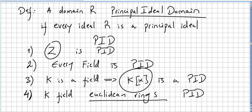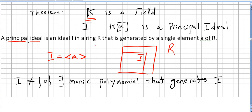In this video we are going to introduce the concept of principal ideal domains. The definition is: if we have a domain R, it is called a principal ideal domain if every ideal in R is a principal ideal. A principal ideal is an ideal I in a ring R that is generated by a single element A.